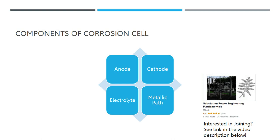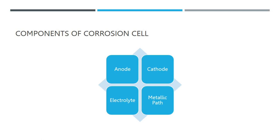The metallic path makes up the fourth component of the corrosion cell. The circuit is completed and electrons can move along the metallic path. Any metal that makes contact with both the anode and the cathode and enables electrons to flow is considered to be on a metallic path. For electrochemical corrosion to take place, this electron flow is necessary. This could be the tank or pipe itself in the case of a pipeline, or a metallic link to another metallic structure.